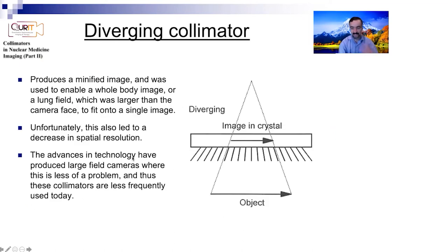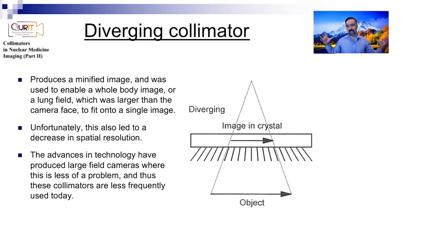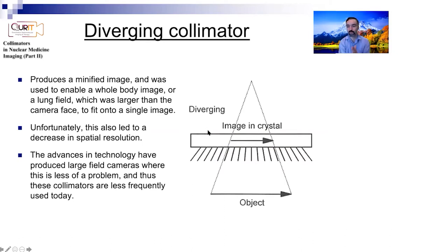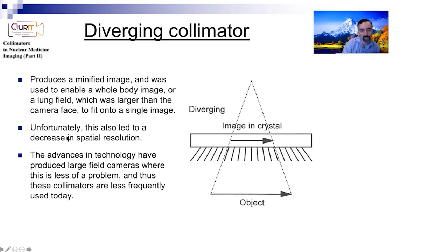Diverging has the exact opposite aspect - you're minifying the image. You might wonder why you'd want to degrade your resolution and make a big object very small. The answer is that especially in the old days, when people had just a small detector and wanted to visualize the whole body in a single quick scan, that made sense - you would scan a whole body and project it onto a small detector.